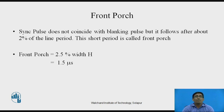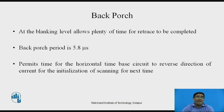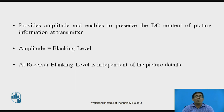The synchronization pulse does not coincide with the blanking pulse but follows after about 2% of the line period. This short period is called the front porch, equal to 2.5% of H, which is 1.5 microseconds. The back porch period is 5.8 microseconds. It allows plenty of time for retrace to be completed and permits the horizontal timebase circuit to reverse the direction of current for initialization of scanning for the next line. Its amplitude is equal to the blanking level.